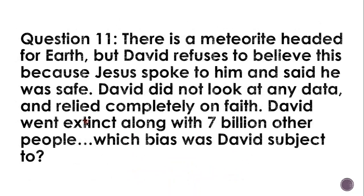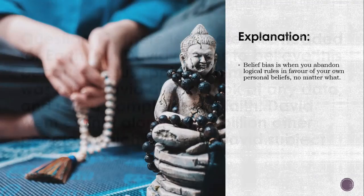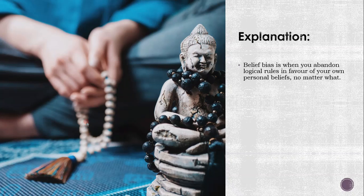Question eleven. There is a meteorite headed for Earth, but David refused to believe this because Jesus spoke to him and said he was safe. David did not look at any data and relied completely on faith. David went extinct along with seven billion other people. Which bias was David subject to? The belief bias. Belief bias is when you abandon logical rules in favour of your own personal beliefs — no matter what, you don't accept the logic. You're completely bounded by faith.